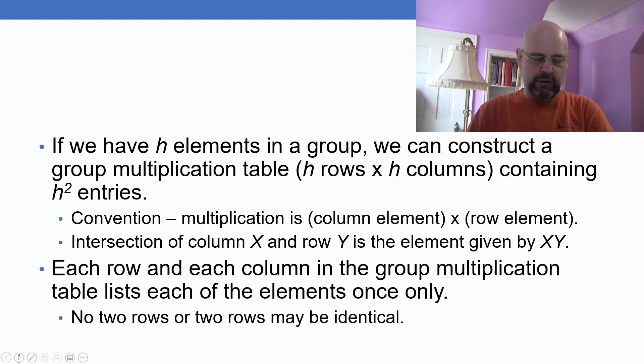It's necessary that each row and each column in the group multiplication table lists each of the elements only once, so no two rows or no two columns may be identical. It's beyond our treatment right here, but we'll just take that as given.